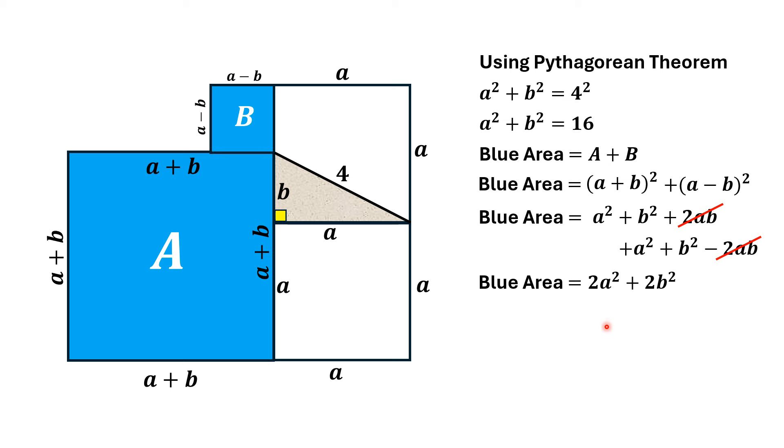Taking two common from the right, we have blue area equals 2 times A squared plus B squared, and we have the value of A squared plus B squared which is 16. So, substituting here, blue area equals 2 times 16, that is equal to 32 square units. That is the answer.